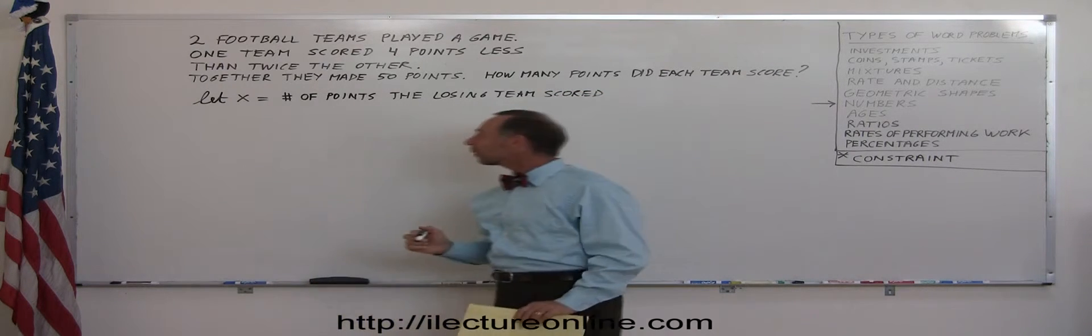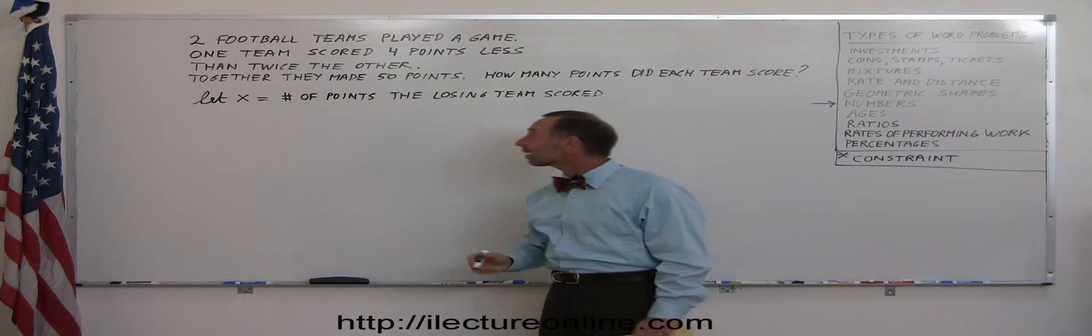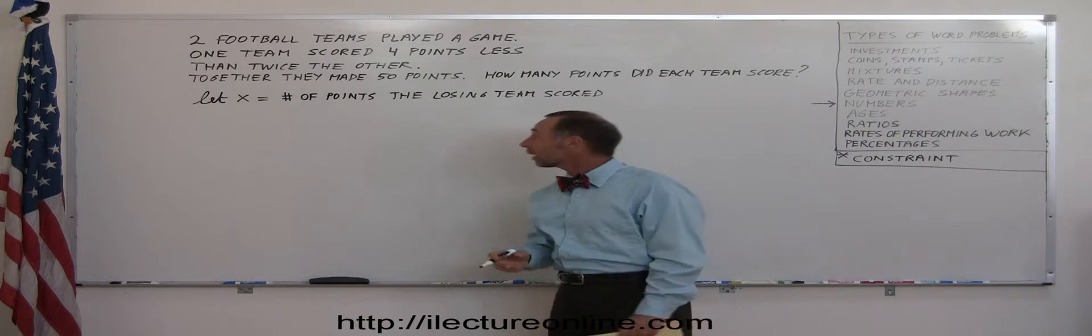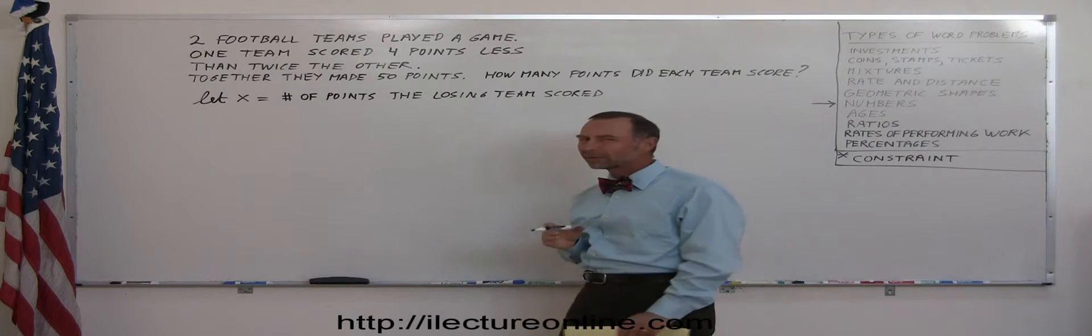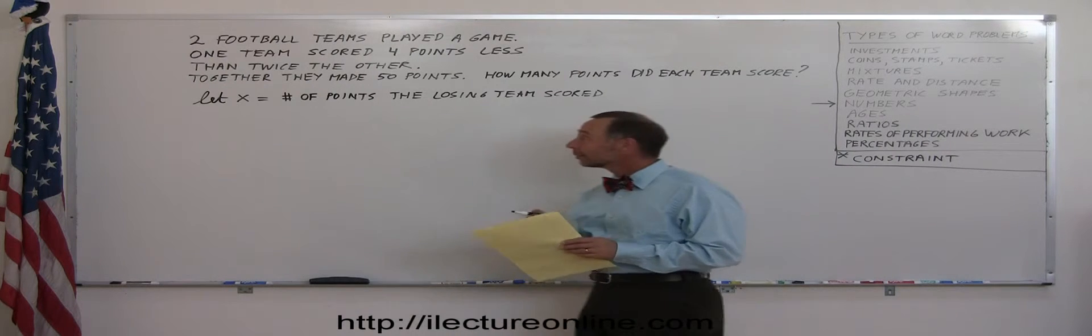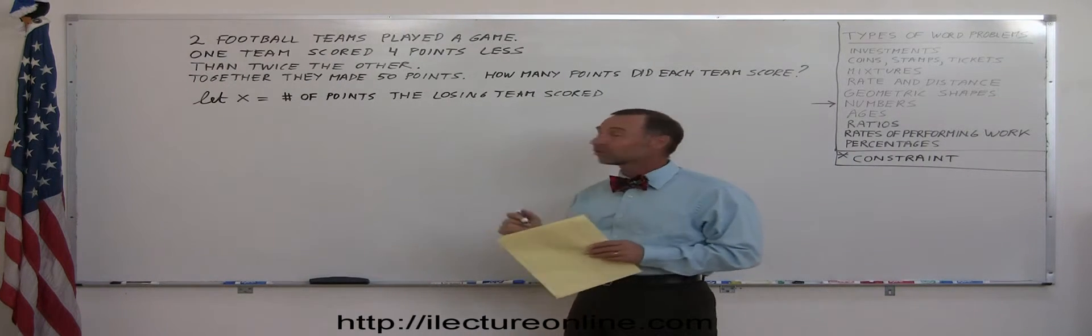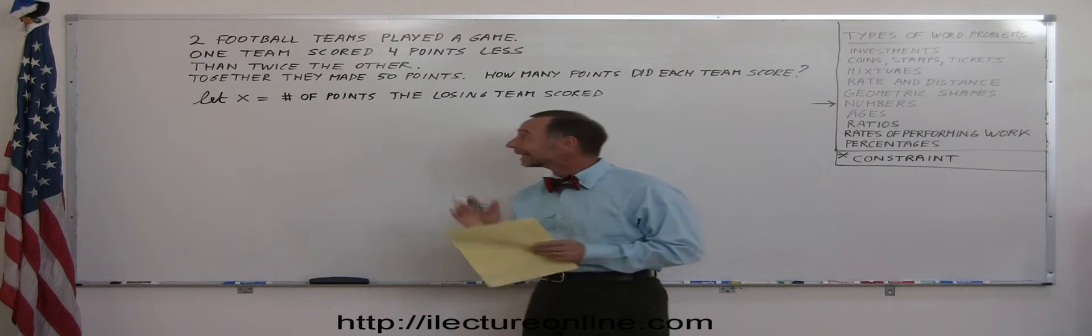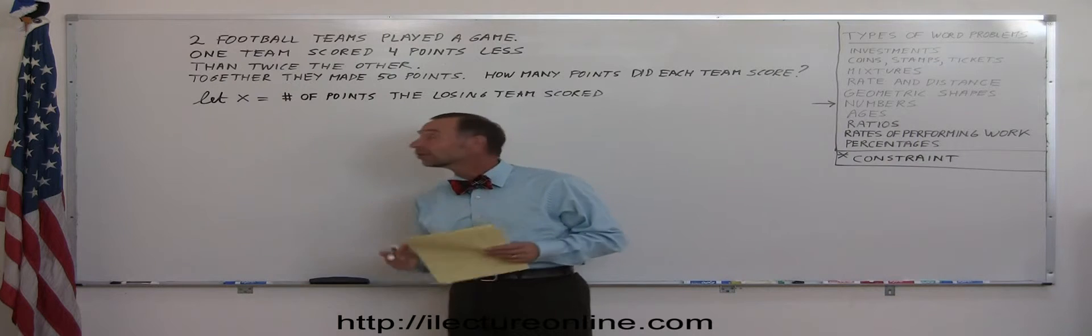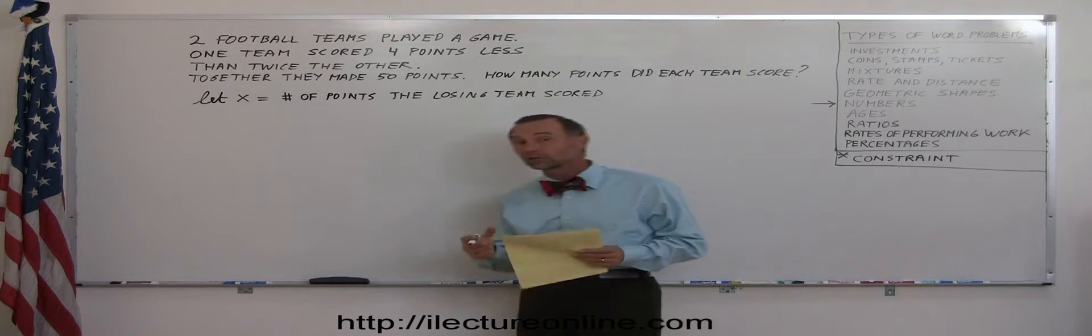Now you may say, why do I want to write all that? That's a lot of waste of time and effort, and why not just write let X equal the loser? Well, that wouldn't be quite correct. You really want to write what X represents, the number of points relative to the problem. So since we're looking to find out how many points each team scored, you really want to let X represent the number of points, in this case the number of points of the losing team.